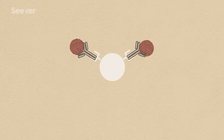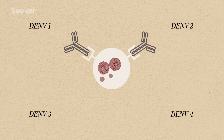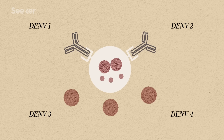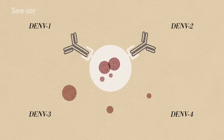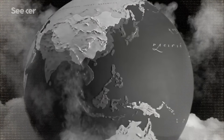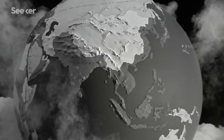A dengue virus doesn't do that. It's a budder—it works with the host cell, taking advantage of host cell energy and metabolism to create new virus particles. Dr. Bennett and her team study the genetic differences between the four serotypes of dengue, and those differences and similarities are what make co-circulating serotypes a dangerous cocktail, contributing to more severe episodes of illness.